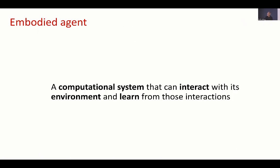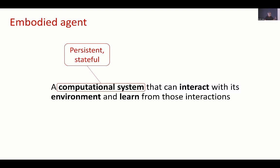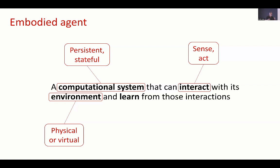An embodied agent is a computational system that can interact with its environment and learn from its interactions. It's a persistent, stateful system running on a computer. It can sense and act with its environment, so it's not just sitting in a computer by itself. The environment could be physical, like scientific instruments in our case, or it could be virtual. It can learn, meaning it has some memory and can adapt its responses. That definition accounts for all sorts of things — a lot of robotics people talk about embodied agents — but our interest is in applying them in science.